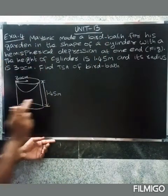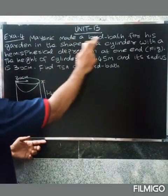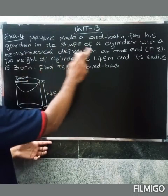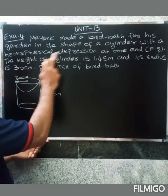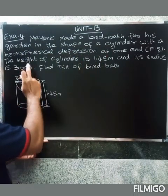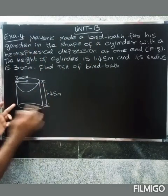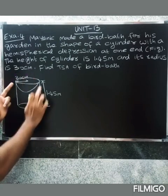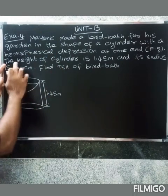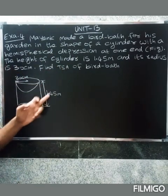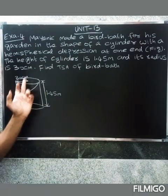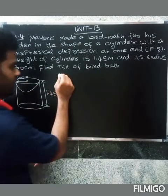This is Unit 13 Example 4. Mayank made a bird bath for his garden in the shape of a cylinder with a hemispherical depression at one end. The height of the cylinder is 1.45 meters and its radius is 30 centimeters. Find the total surface area of the bird bath.